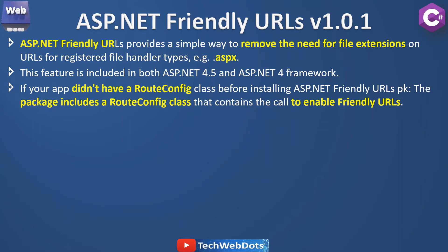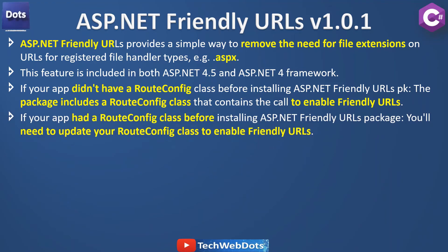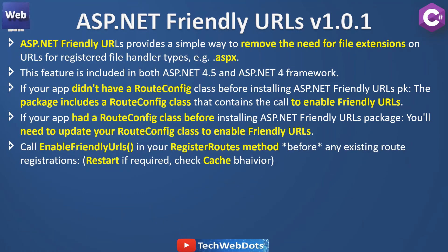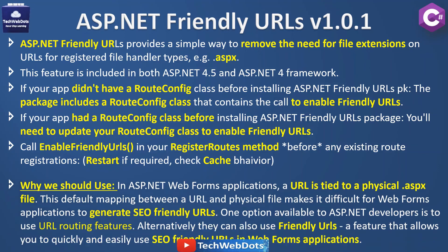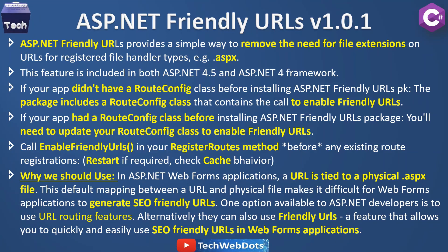Don't worry about the code — the GitHub URL is in the description of this video. If your application already had a RouteConfig class before installing the ASP.NET Friendly URLs package, you will need to update it to enable friendly URLs by calling EnableFriendlyUrls in your RegisterRoutes method before any existing route registration — that should be the first line. Even after downloading the NuGet packages and applying changes, if the application is not working, I strongly suggest you restart your solution and Visual Studio, and then it will definitely work.